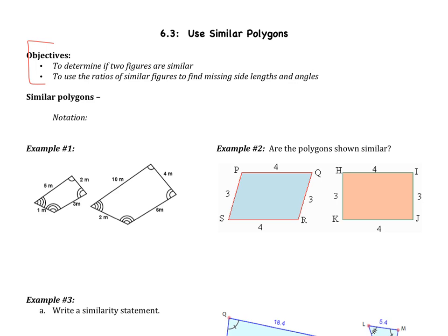What we learned in sections 1 and 2 really relates to similar polygons. We learned about the geometric mean, and we learned about setting up proportions and ratios and solving these proportions. We learned all of that so that we could learn about similar figures. So the first thing we should talk about is what does it mean for two polygons to be similar.